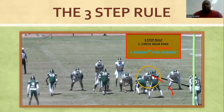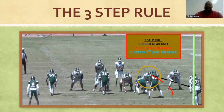Again, that three-step rule is just a timer that we give that uncovered lineman to know: after three steps, if nothing has come into my zone, it's time to snap up to that second level defender. That's something we put in place to help those guys execute blocking on the second level against no movement.